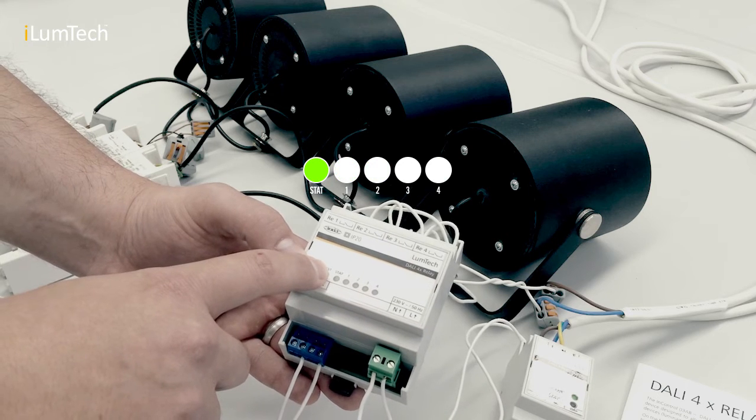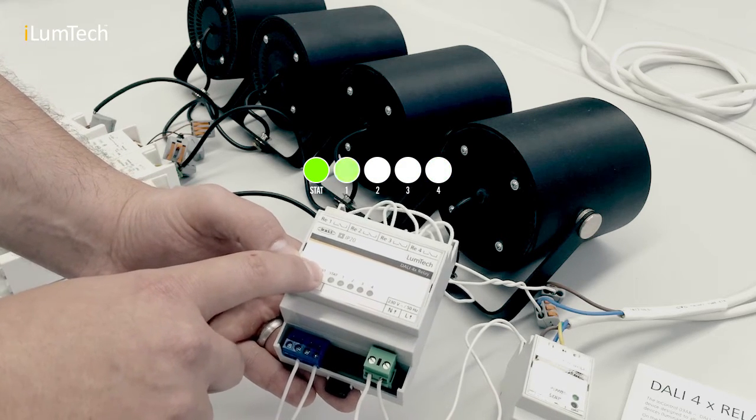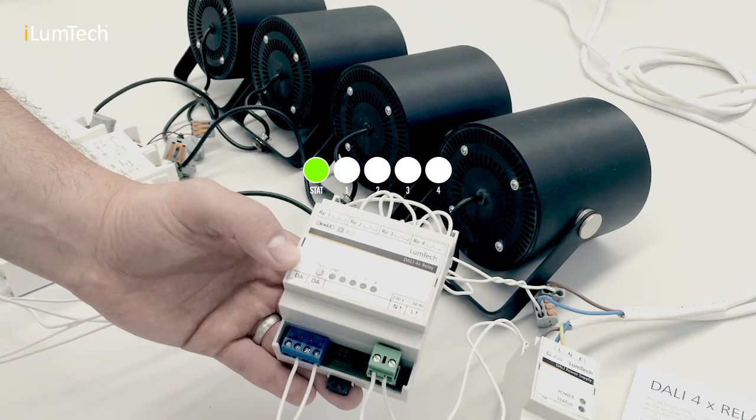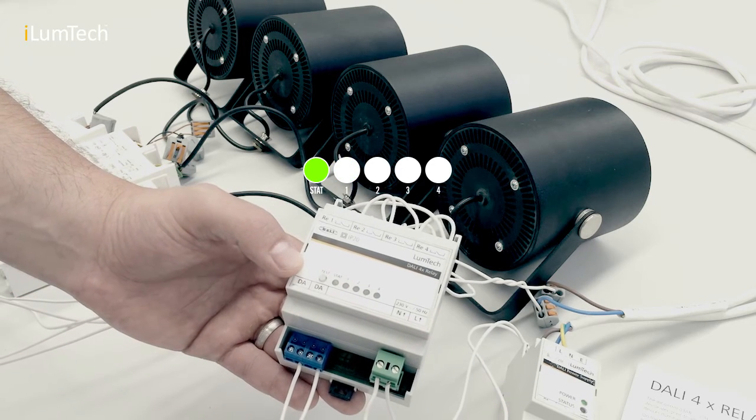Manual control mode overrides DALI control immediately after pressing the push button. DALI control is restored again after five seconds of push button inactivity. This is indicated when the LED indicator of the selected relay stops flashing.